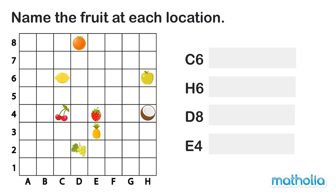Name the fruit at each location. This time we are given grid locations. We have to use these locations to find fruits inside the grid. The first grid location is C6. So the fruit we are looking for is in the grid square where column C meets row 6.